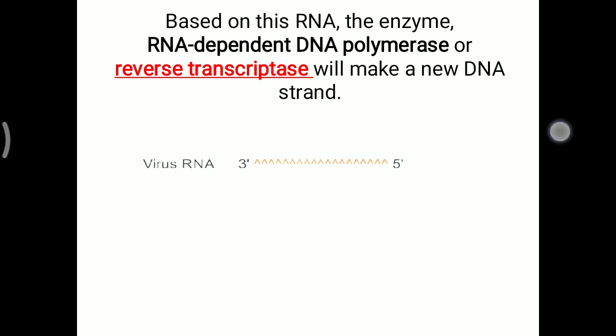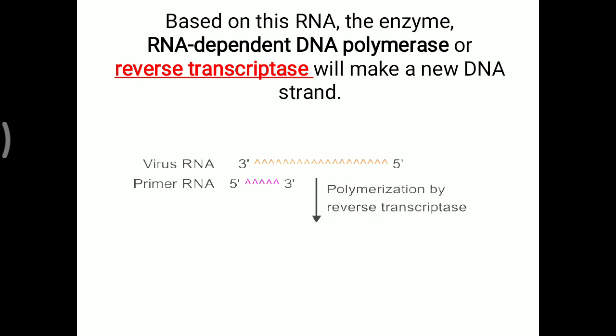How is this DNA strand made? First, over this virus RNA, a primer RNA is generated — same as in DNA replication, an RNA primer is formed first. Then, with the help of polymerization by reverse transcriptase enzyme, a new DNA strand is generated over this RNA primer. So there is one strand of virus RNA, over that a primer RNA shown in pink, and then a blue DNA molecule is generated with the help of reverse transcriptase. One strand of RNA and another strand of DNA — this is called the RNA-DNA hybrid.